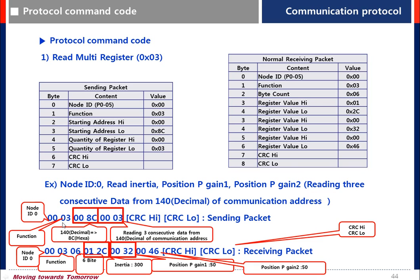For the read multi-register command: node ID is 001, function is 03, 03 is read multi-register. Starting communication address is 008C. 8C is for Inertial, and 0003 means reading 3 consecutive data registers. The receiving packet contains: node ID, function code, 06 meaning 6 bytes of data — 012C for Inertial, 0032 for Position P Gain 1, and 0046 for Position P Gain 2.